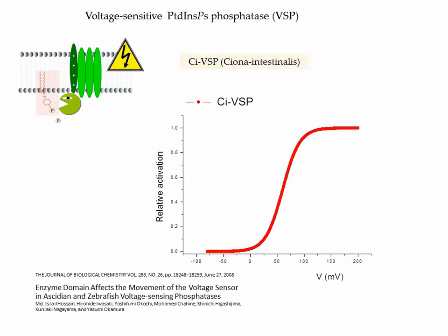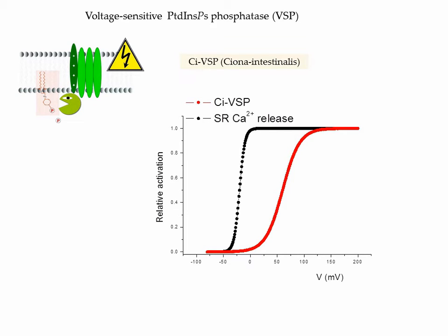This is the voltage dependence of activation of CI-VSP as reported in the literature. This is the voltage dependence of activation of SR-calcium release in mouse muscle fibers. It shows that it should be possible to measure SR-calcium release fully activated, either in a range of voltages where the VSP will be very little activated, or in a range of voltage where the VSP will be very substantially activated. Comparing calcium release between these two situations should tell us whether activating the VSP and depleting PIP2 in the T-tubule membrane affects SR-calcium release.